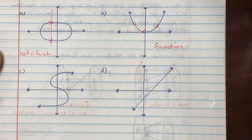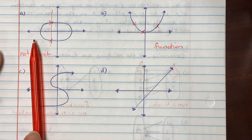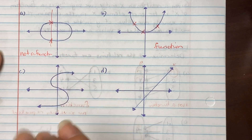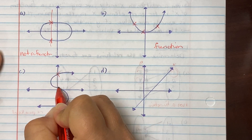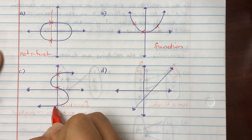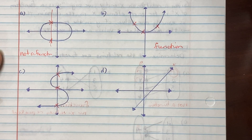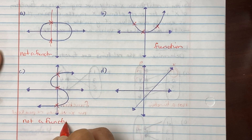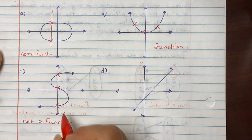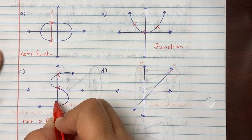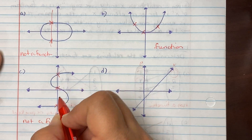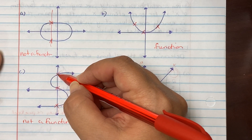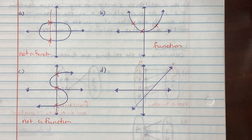On c, your S-graph — the minute I rolled over the middle section, it hit more than once: once, twice, three times in the same position for the x. So it's not a function. These three points have the same x-coordinate of zero: (0, -5), (0, 1), and (0, 7) — they all have the same x value.